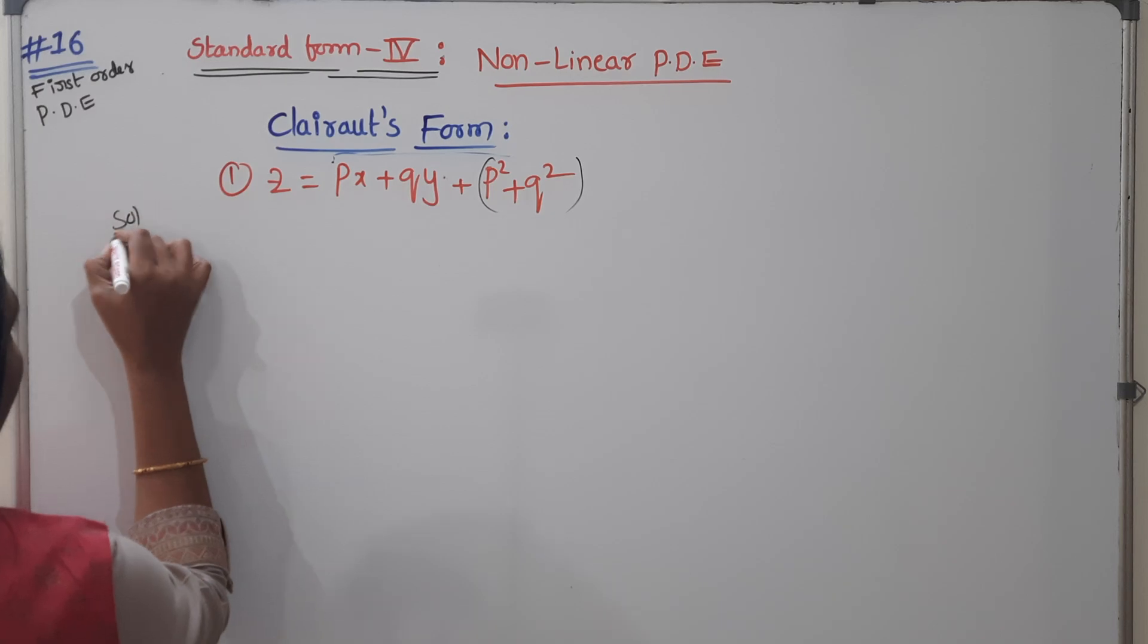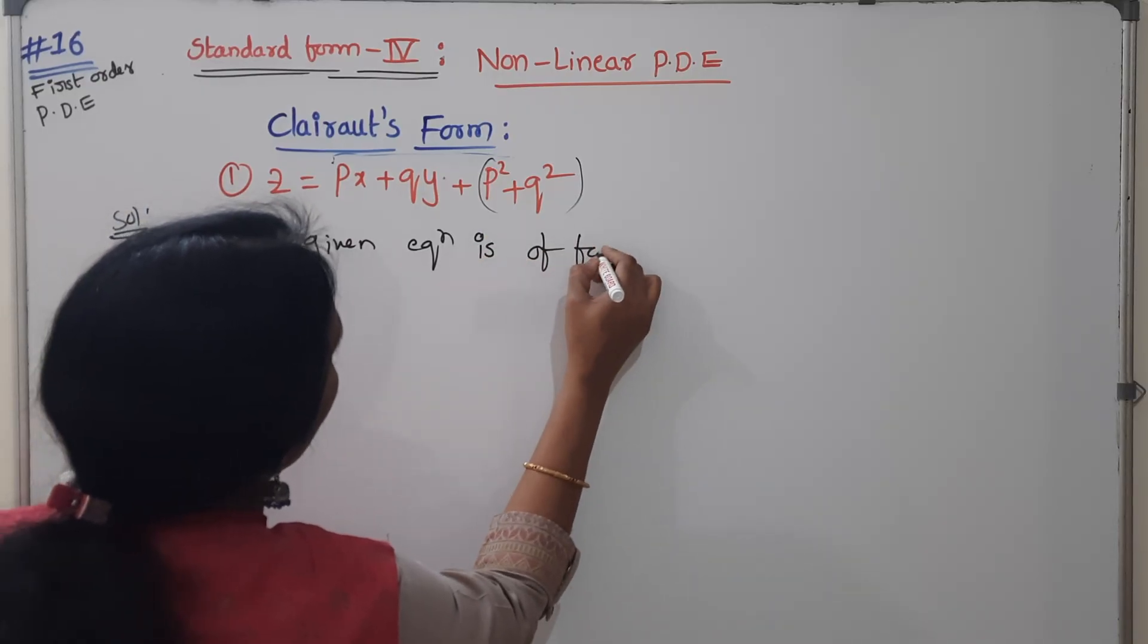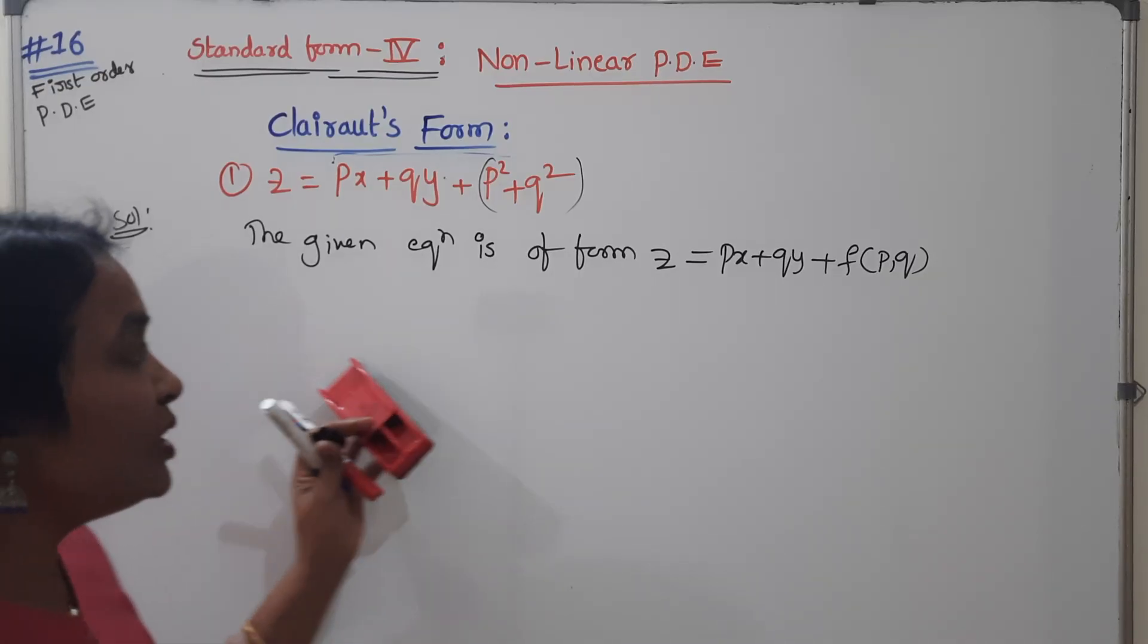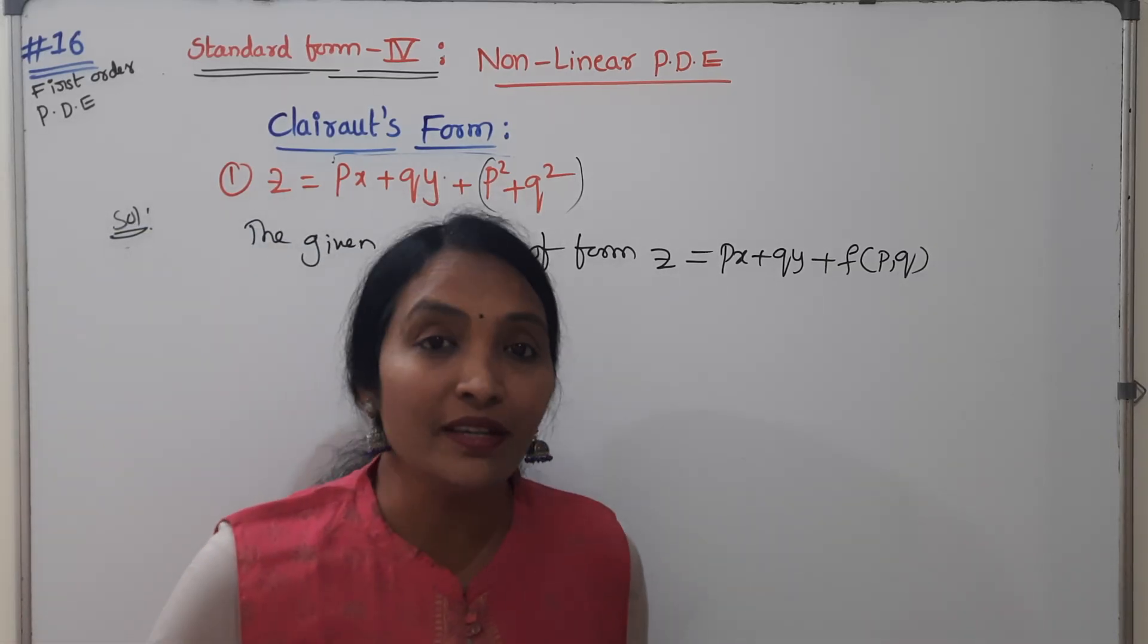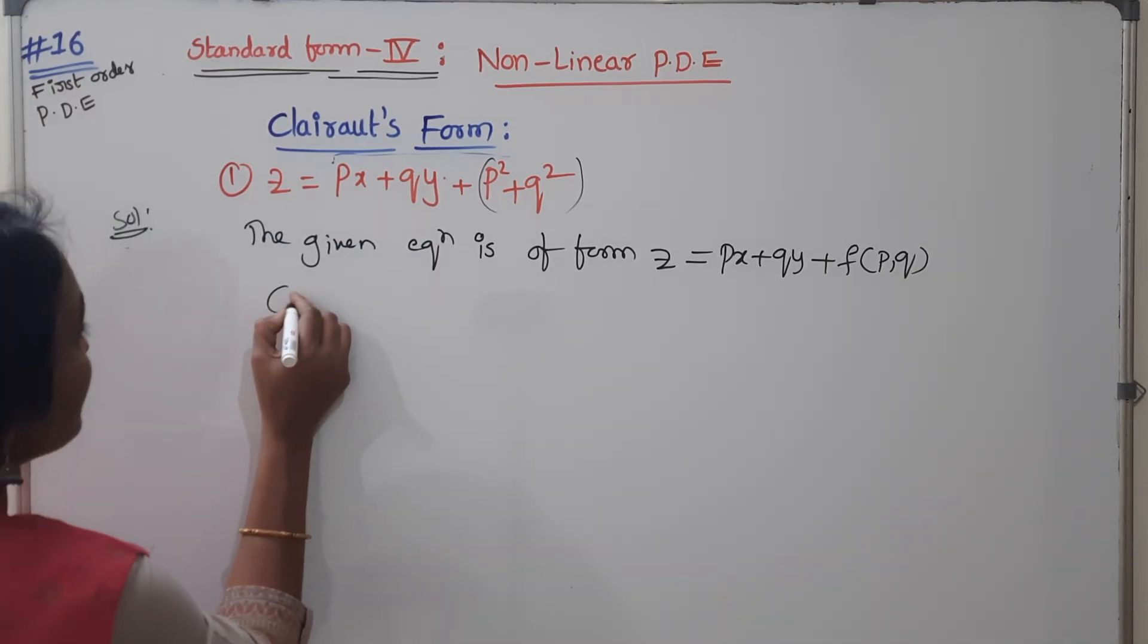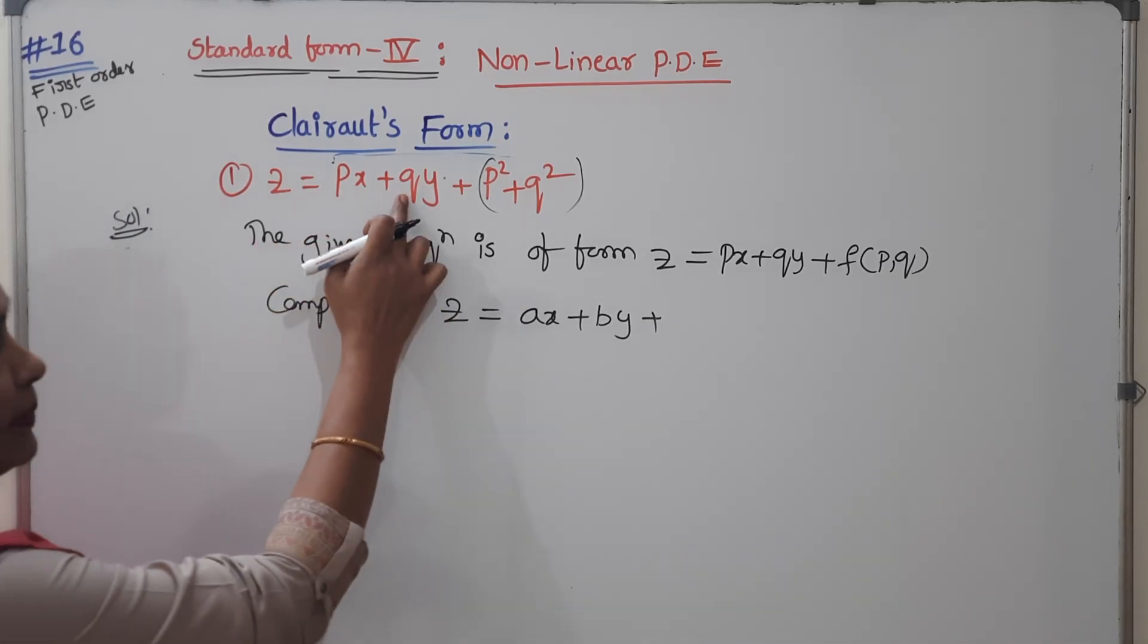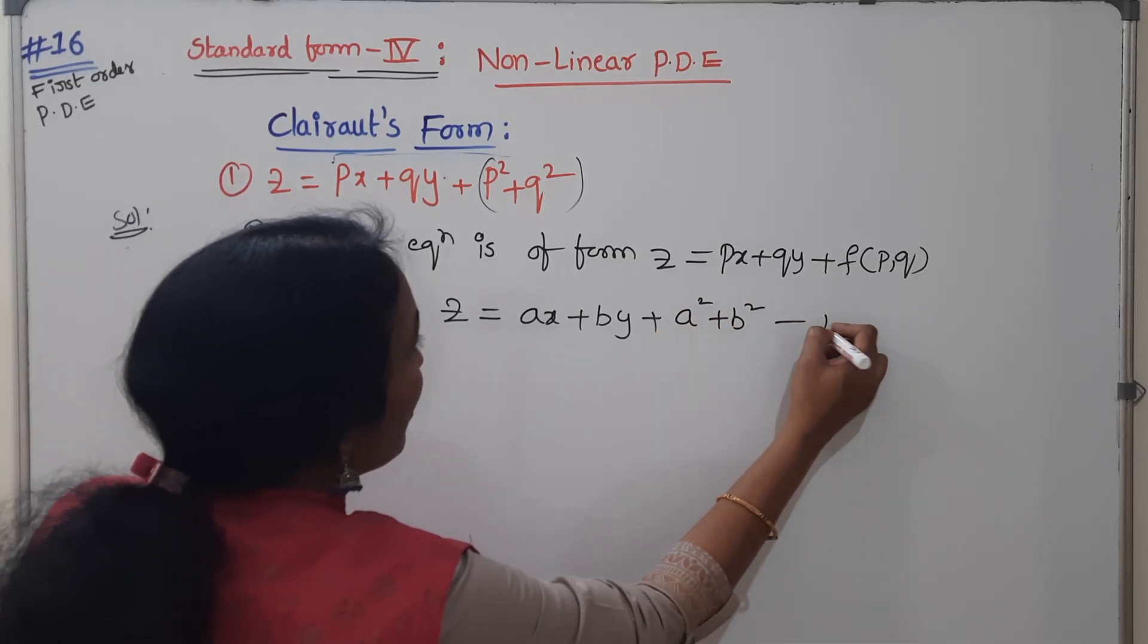PX plus QY plus this is nothing but F of P comma Q. In this format you will identify. The given equation is of the form Z equals PX plus QY plus F of P, Q. Therefore the given one is Clairaut's equation. What is our complete solution? P replaced with A and Q replaced with B. The complete solution here is Z equals AX plus BY, and in the place of P put A, in the place of Q put B, then P square plus Q square means A square plus B square.